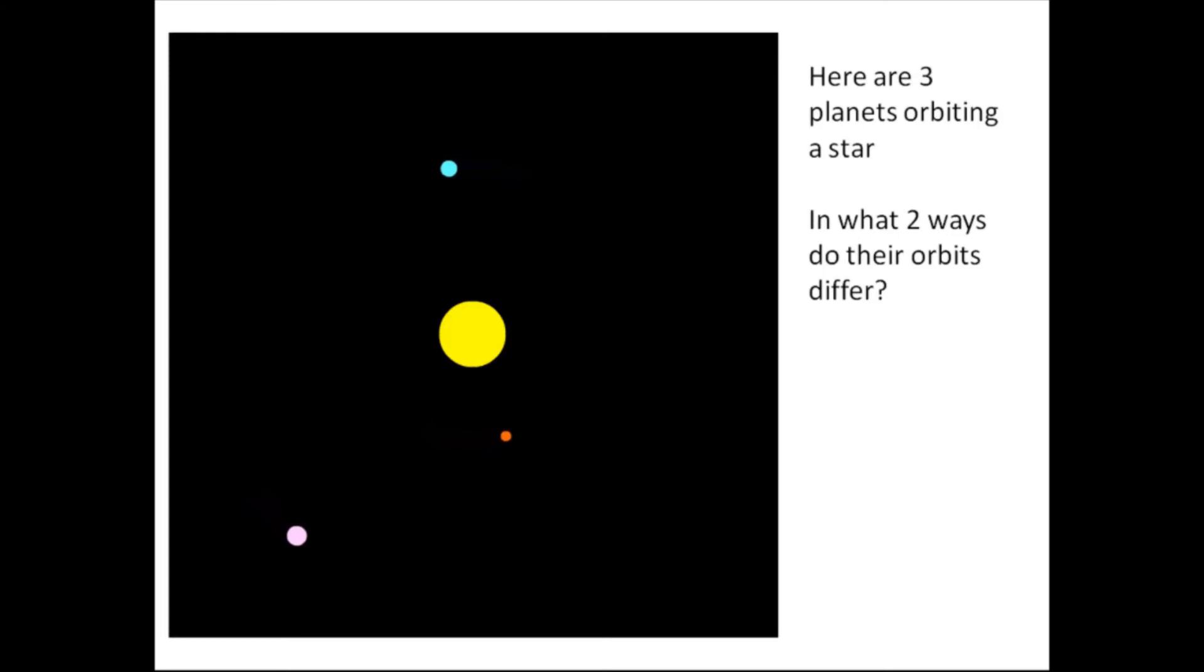The orange planet, which is closest to the sun, is traveling fastest. And then this lilac-colored planet, which is furthest from the sun, is traveling slowest. So the speed of the planet, and also its orbital period, depends on the radius of its orbit. The planets which are closest to the sun whizz around the sun pretty fast. Planets which are further away from the sun take their time. They travel pretty slowly, and they've got further to go as well. So they're going to take a lot longer to go around the sun.